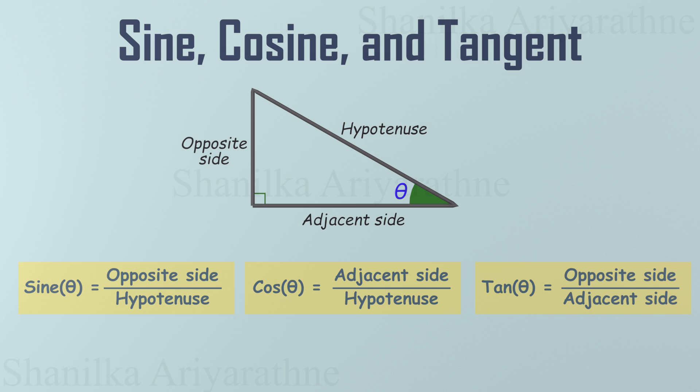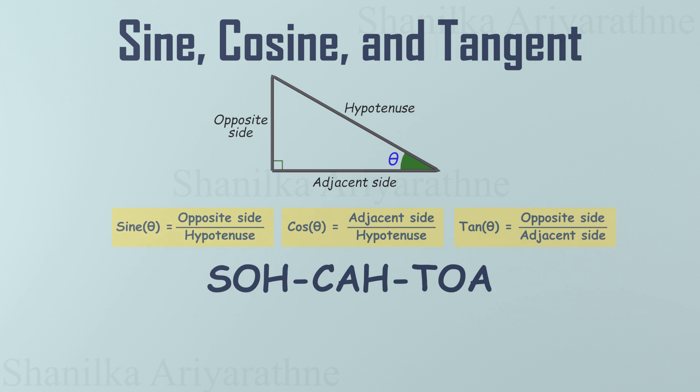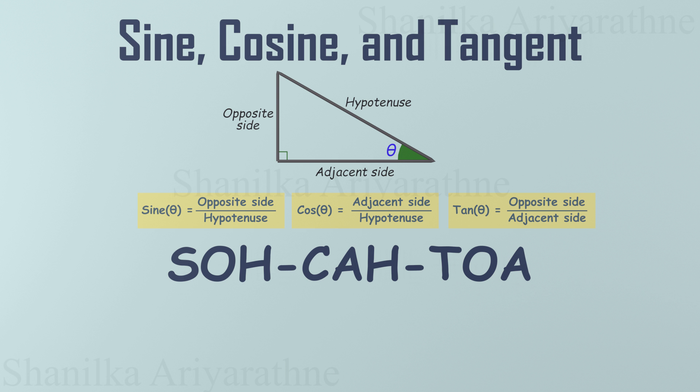To remember these ratios, there's one classic trick—SOHCAHTOA—a catchy phrase that sticks in your head like a favorite song. Sine is opposite by hypotenuse. Cosine is adjacent by hypotenuse. Tangent is opposite by adjacent. SOHCAHTOA sounds like some ancient chant, right? But trust me, once you get it, you'll never forget it. This little phrase is your best friend for tackling trigonometry problems with ease.